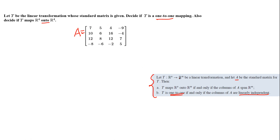T maps R4 to R4, and T maps onto R4 if and only if the columns of A span R4 — meaning any vector in R4 can be written as a linear combination of the columns. To check both conditions, we convert this matrix into its reduced row echelon form.